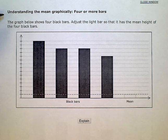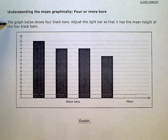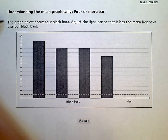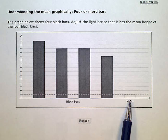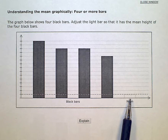Understanding the mean graphically, with four or more bars. The graph below shows four black bars. Adjust the light bar — the one that's light — so that it has the mean height of the four black bars.